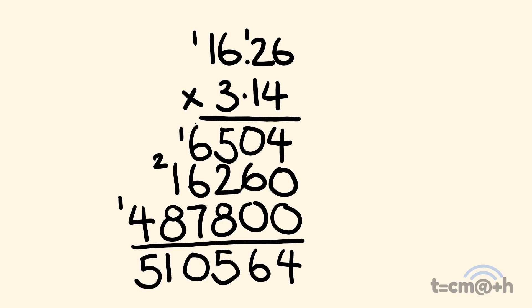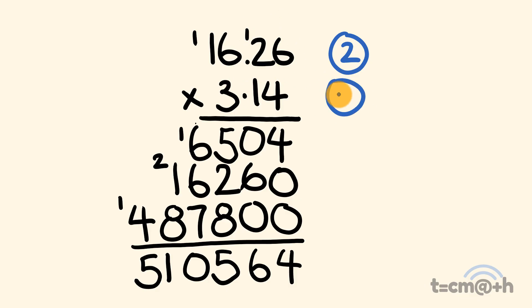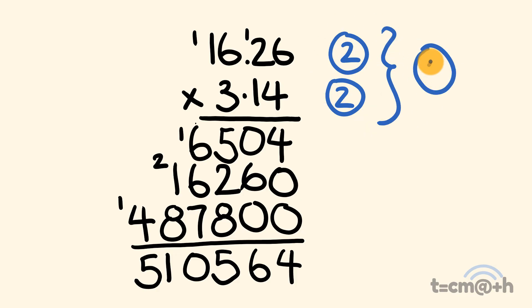Now let's sort out the decimals. For 16.26 we have two numbers to the right of the decimal place. For 3.14 we also have 2. So 2 plus 2 is equal to 4 — starting at the right we count in 4 decimal places: 1, 2, 3, 4. Our answer is 51.0564.